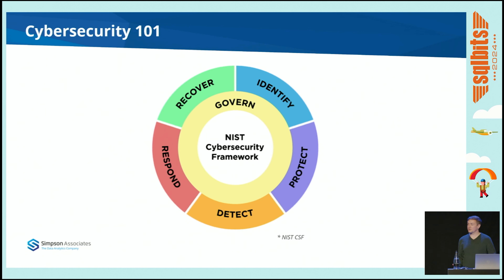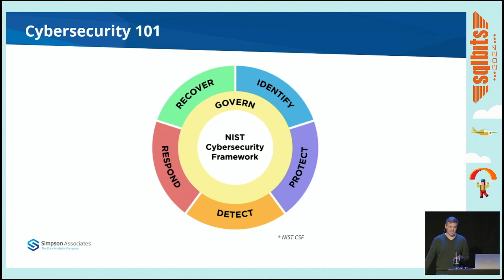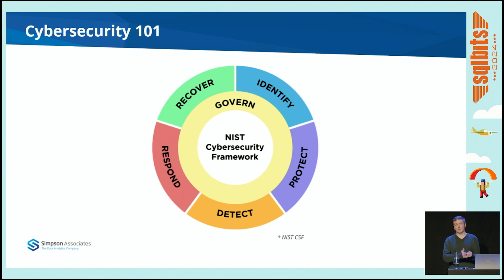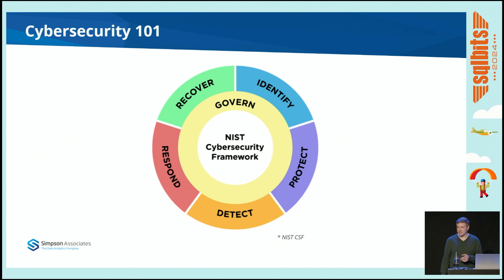Beyond detect, once we can detect threats, we then need to be able to respond. Respond could mean we've got a compromised user account and we disable it, a laptop infected with malware that we isolate, or a blob storage account that's exposed and we block network access to it. Worst case scenario, we move on to recover — restoring backups, looking at availability zones in Azure for failover to a different region. And in the middle of all of this is governance: setting the direction, strategy, and policy for our approach to identifying and protecting risks on cloud.